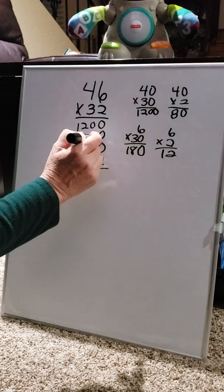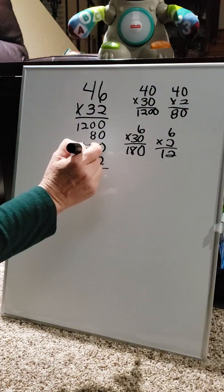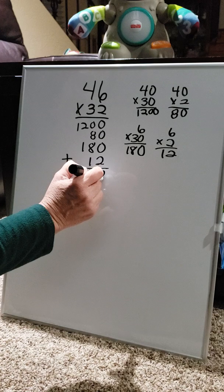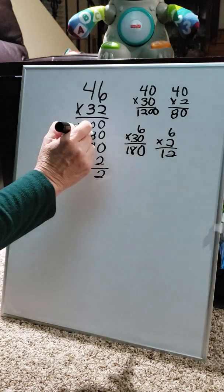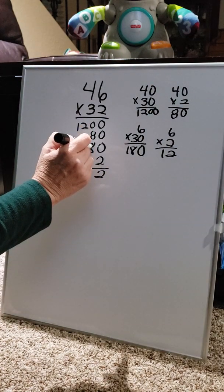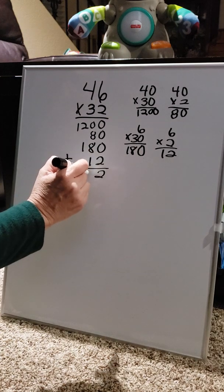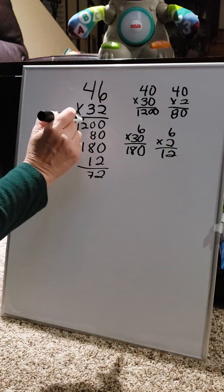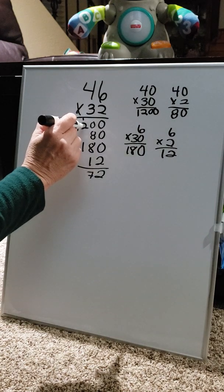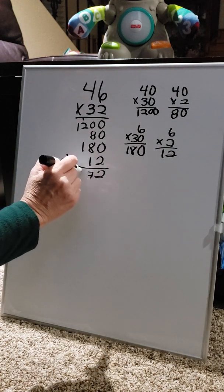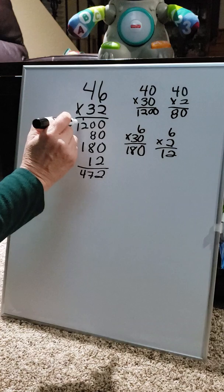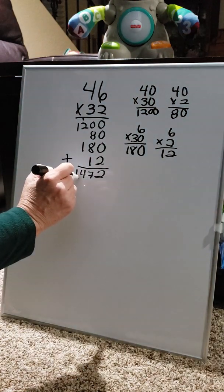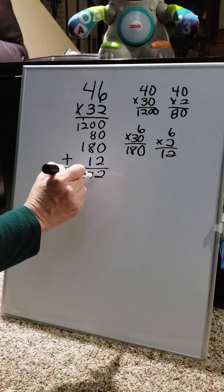0 plus 0 is 0. Another 0 is 0. 8 plus 8 is 16. Plus 1 is 17. Carry the 1. 1 plus 2 is 3. Plus another one is 4. And then 1. 1,472.